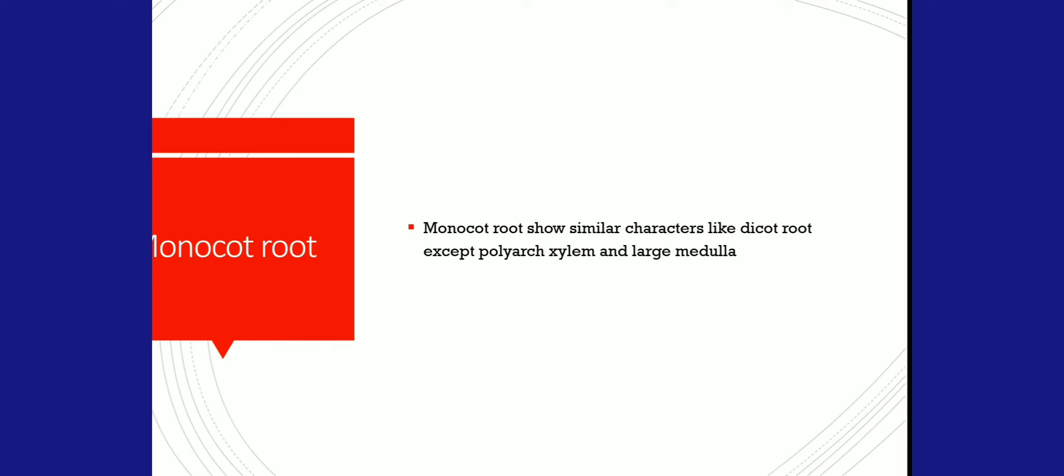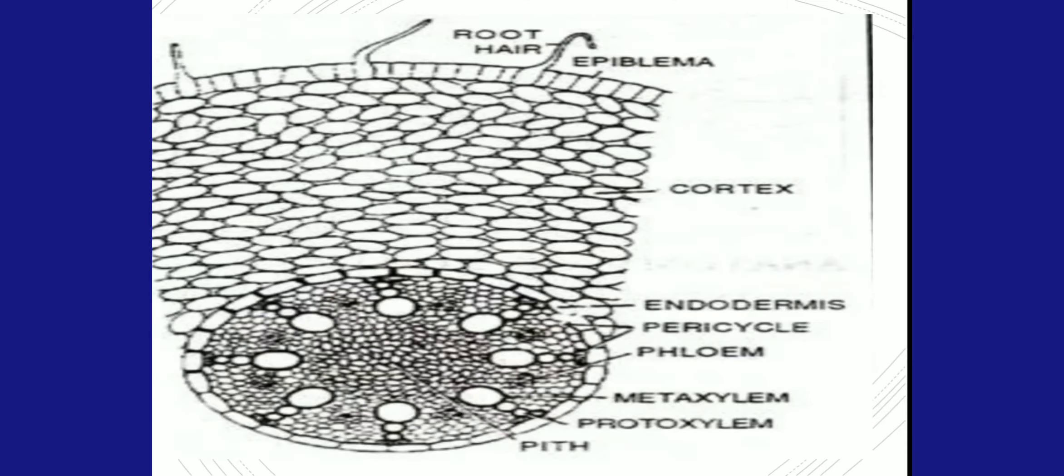In monocot roots, root hair, epiblema, cortex with intercellular spaces, endodermis, pericycle, metaxylem, and protoxylem are all present. However, you can see more than six xylem bundles.